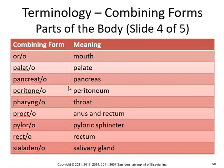Pancreat — pancreatitis, inflammation of the pancreas. Pharyngeal throat, pertaining to the throat. Pyloric — pyloric sphincter. How about a pyloroplasty? That would be a surgical repair of the pyloric sphincter. Recto — a rectocele is a hernia of the rectum. Then psiloden — how about a psilodenectomy? Removal of the salivary glands.